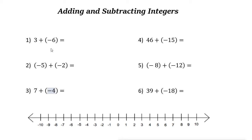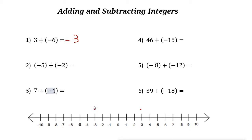One way to solve this is using the number line. We want to add negative 6 to 3, so we go to 3 on the number line. When it says plus negative 6, that means move 6 units to the left: 1, 2, 3, 4, 5, 6. The answer is negative 3. When you add a negative integer to a positive integer, you move from right to left on the number line.